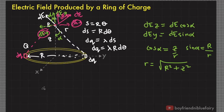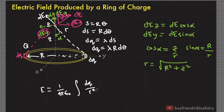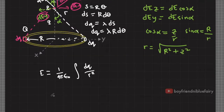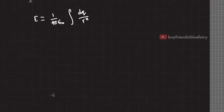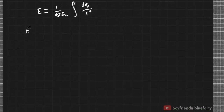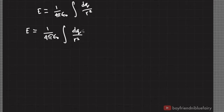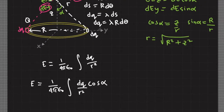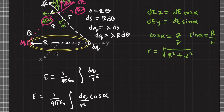Recall from previous discussion that the magnitude of E equals 1 over 4π epsilon-naught times the integral of dq over r squared. From this, the z-component of E is therefore equal to 1 over 4π epsilon-naught times the integral of dq over r squared, multiplied by cosine alpha.